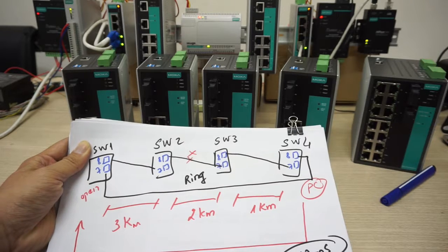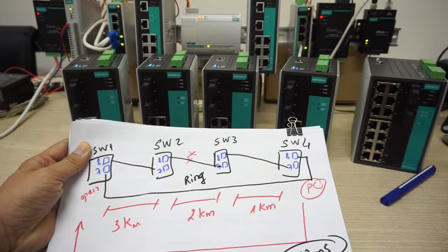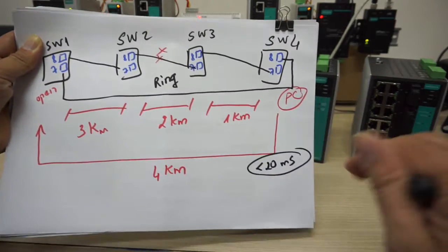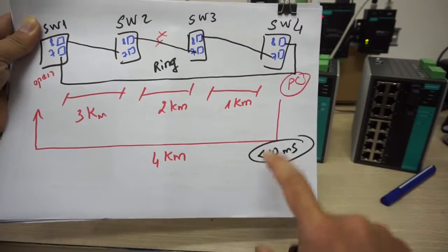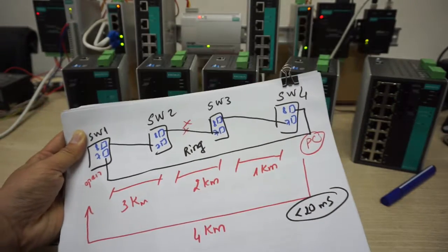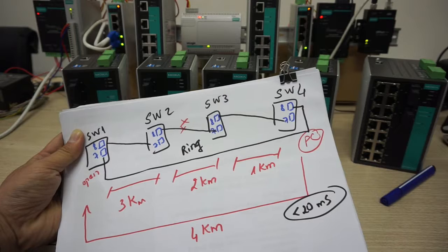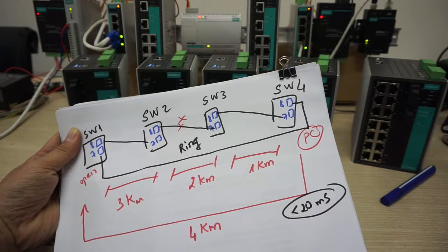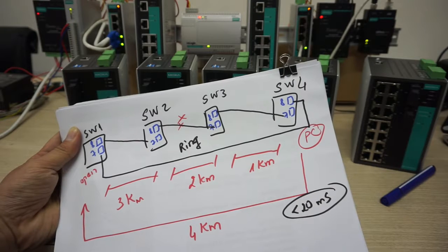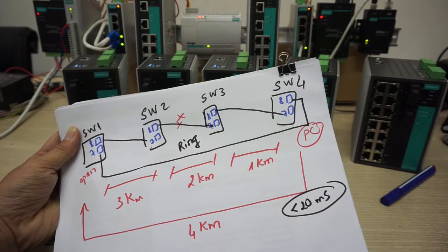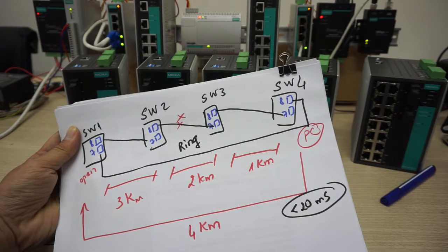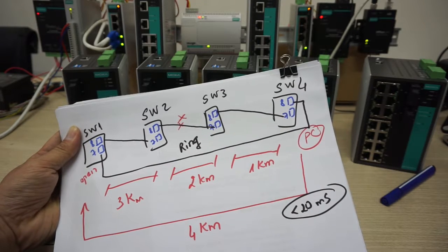This function and technology we call Turbo Ring. Why? Because Turbo Ring can support speeds below 20 milliseconds. So it's very fast, especially when you use in oil, petrol, or chemical industrial. Why? Because the speed is really necessary and important when you want to collect data to your monitoring room. And of course it's for safety.